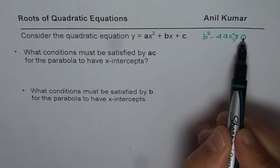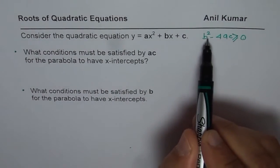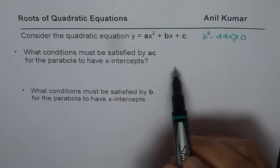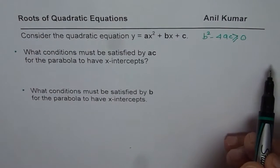If it is equal to 0, you get 1 x-intercept, but if it is greater than 0, you get 2. But in any case, you do get x-intercepts.